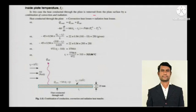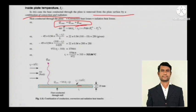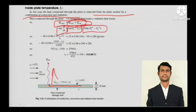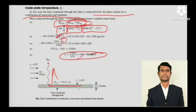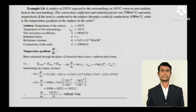The heat conducted through the plate is removed by a combination of convection and radiation. So: Q_conduction = Q_convection + Q_radiation. Apply Fourier's law for conduction, Newton's law for convection, and Stefan-Boltzmann law for radiation. Put in all values and solve — the inside temperature T_i is the unknown. It is simple mathematics; just be clear about what is given and what needs to be found.